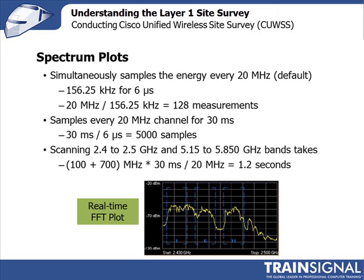It is going to do one 20 megahertz channel, then the next 20 megahertz channel, then the next. So if you were scanning between 2.4 and 2.5 gigahertz — that's 100 megahertz of spectrum — and simultaneously wanting to scan between 5.15 and 5.85 gigahertz, another 700 megahertz of spectrum, then it slices it into 20 megahertz channels and scans each one for 30 milliseconds.